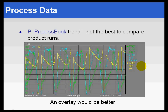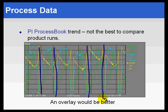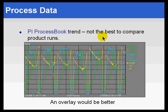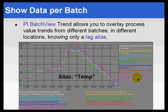ProcessBook is not the best way to compare product runs. If you want to compare one product run to another, the better way is to overlay them on top of each other — and that's what batch or event tracking allows. Using the batch records organized in the system and the client application called BatchView, we can align batches not using absolute time but relative time — relative to the start of the batch. So five minutes, ten minutes, fifteen minutes into the batch, and so on.